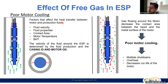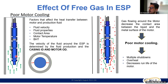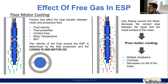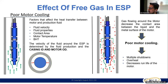This is the first problem we're going to talk about: gas flowing around the ESP. Motor cooling downhole depends on fluid velocity — theoretically the fluid velocity around the motor should be higher than one foot per second. That's the rule of thumb. The type of fluid is the most important factor. If the fluid is liquid, that's how the motor was designed to be cooled. But when gas is flowing around the motor, it is not efficient at transferring heat, so you get poor motor cooling.